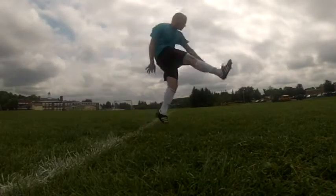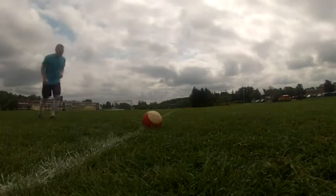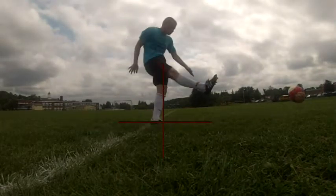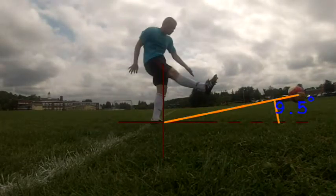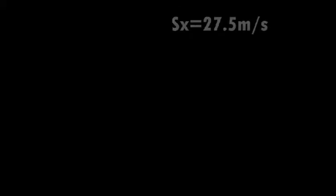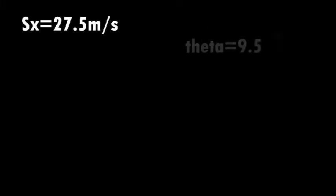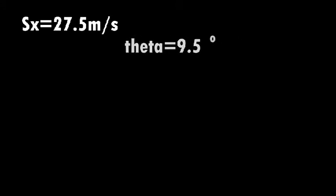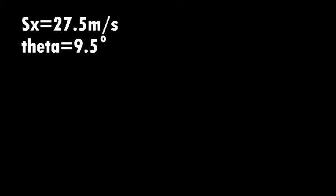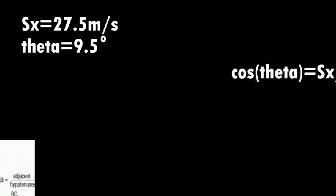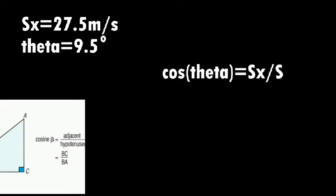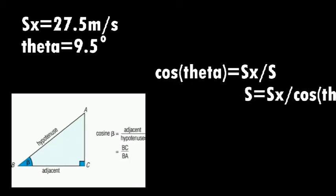Next, I need to measure the launch angle of the ball. In order to do this, I set up my axis and take a measurement of 9.5 degrees. With my horizontal speed of 27.5 meters per second and my angle of 9.5 degrees, remembering a little bit of trig can allow me to solve for my speed.